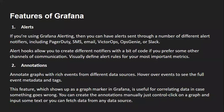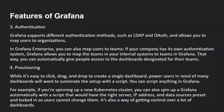The next feature is annotations. You can annotate Grafana with rich events from different data sources. Hovering over an event shows the full event metadata and tags. This feature shows up as graph markers in Grafana and is useful for correlating data in case something goes wrong. You can create annotations manually by control-clicking on a graph and inputting some text, or you can fetch data from any data source.